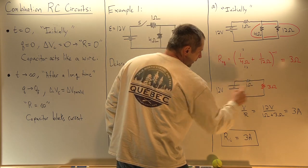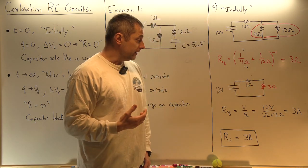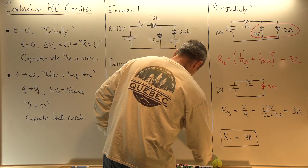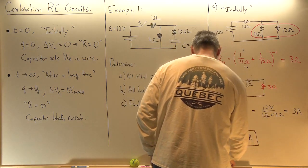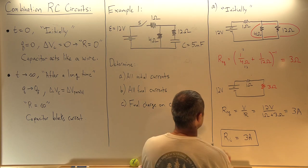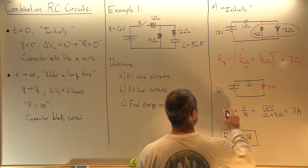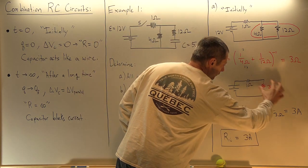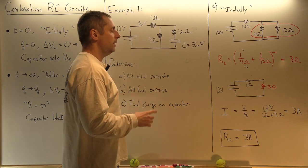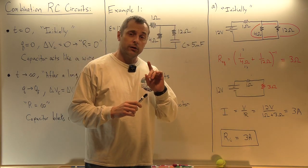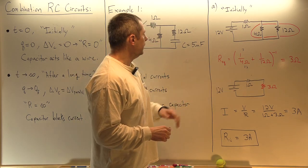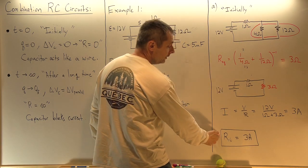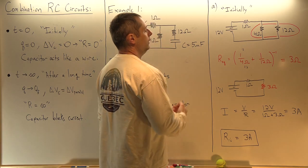So I redraw this circuit and now it looks like a 1-ohm and a 3-ohm in series to the battery. I can find the current coming out of the battery using Ohm's Law: I equals V over R. That's 12 volts over the total resistance of 4 ohms, giving 3 amps. Looking at the original picture, all the current coming out of the battery goes through that 1-ohm resistor, so I₁ initial equals 3 amps.